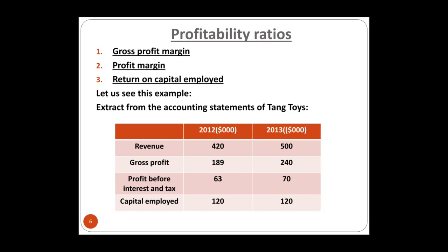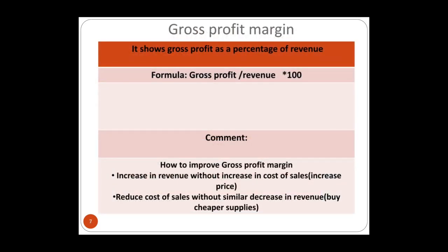Gross profit margin shows gross profit as a percentage of sales. From the income statement: sales revenue minus cost of goods sold equals gross profit. So we ask: what percentage of gross profit comes out of sales? If the answer is 20%, that means for every dollar sold, there are 20 cents as gross profit margin. If it rises to 30%, that shows an improvement.